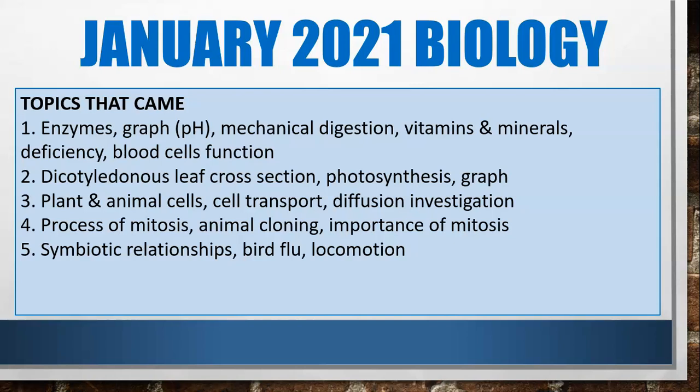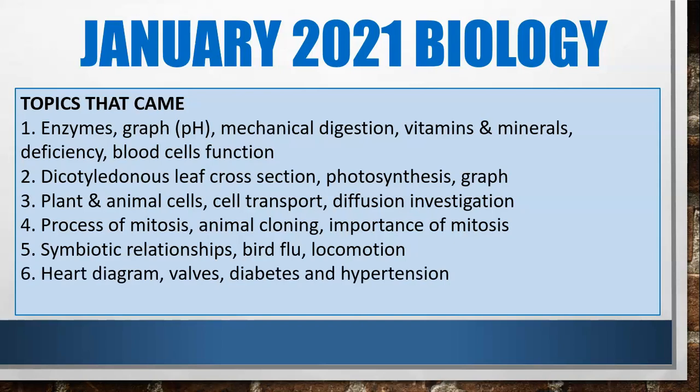The final question was all about the heart — a diagram of the heart where you had to name and label the three heart valves. Finishing off, you had to compare the causes of diabetes and hypertension and then deal with managing these diseases. That was the January 2021 biology paper.